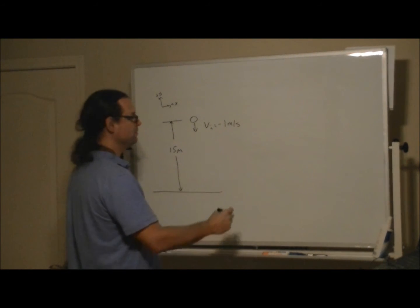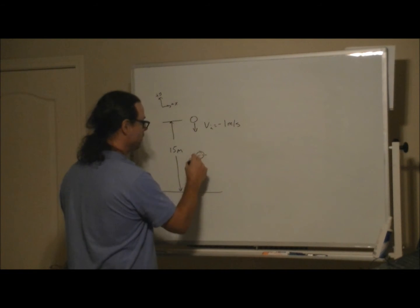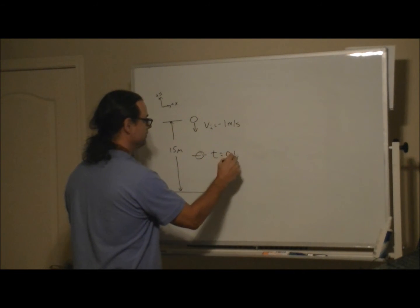What's the speed of the ball 0.6 seconds after it's released? We don't exactly know where it was, so at t equals 0.6 seconds, v final equals what?